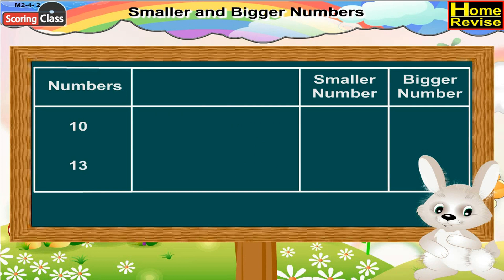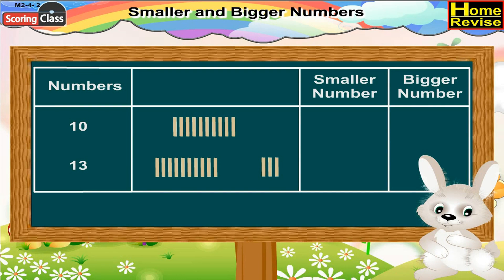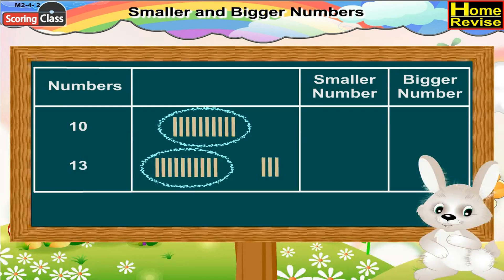Now, 10 and 13. Draw 10 lines for number 10 and 13 lines for number 13. Count 10 lines in each number and encircle them. You have created a group of 10 in each number. In number 10, after encircling the 10 lines, no line remains. In number 13, after encircling the 10 lines, 3 lines remain. Which means 3 is bigger than 0. So, 10 is a smaller number and 13 is a bigger number.